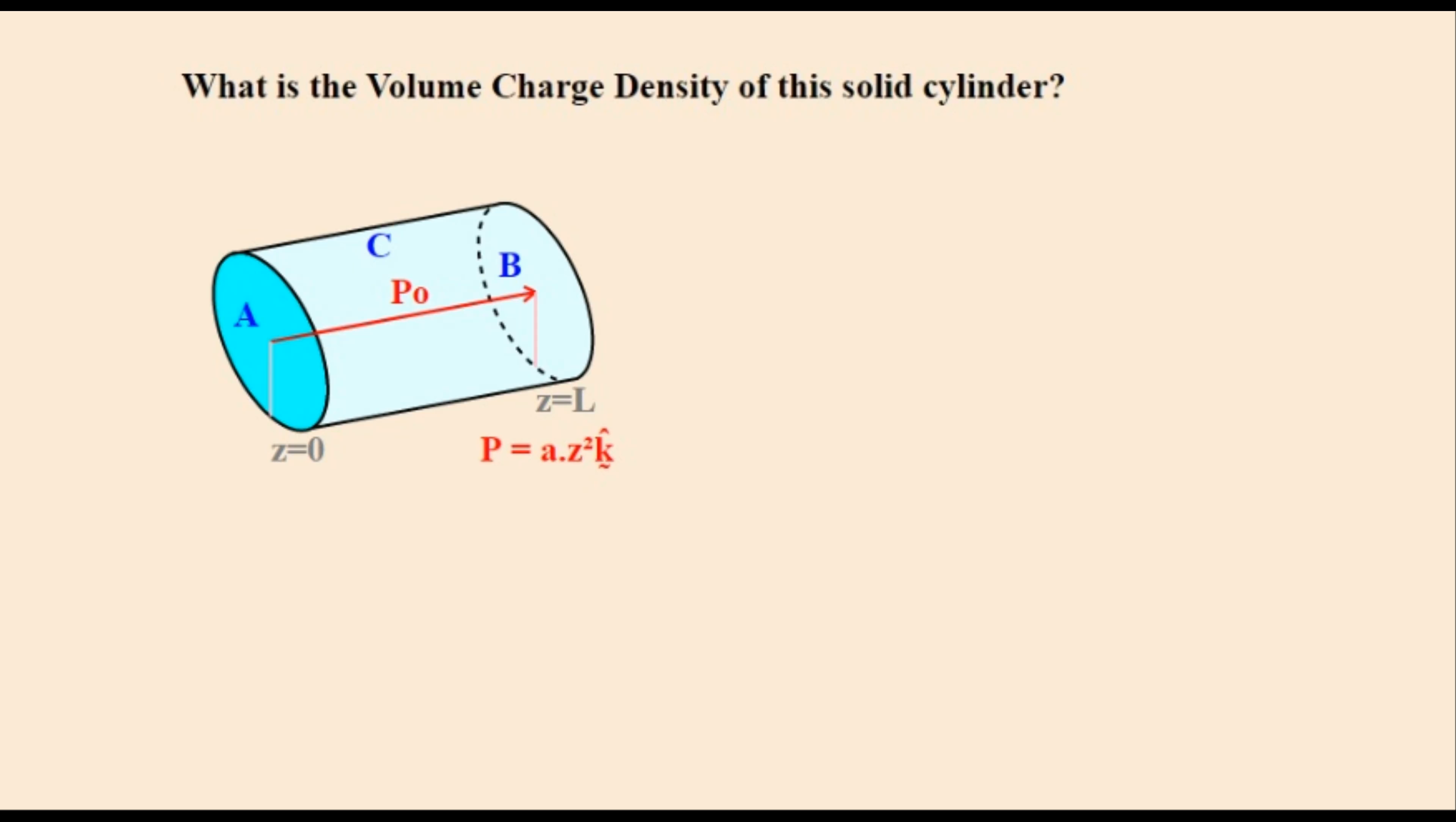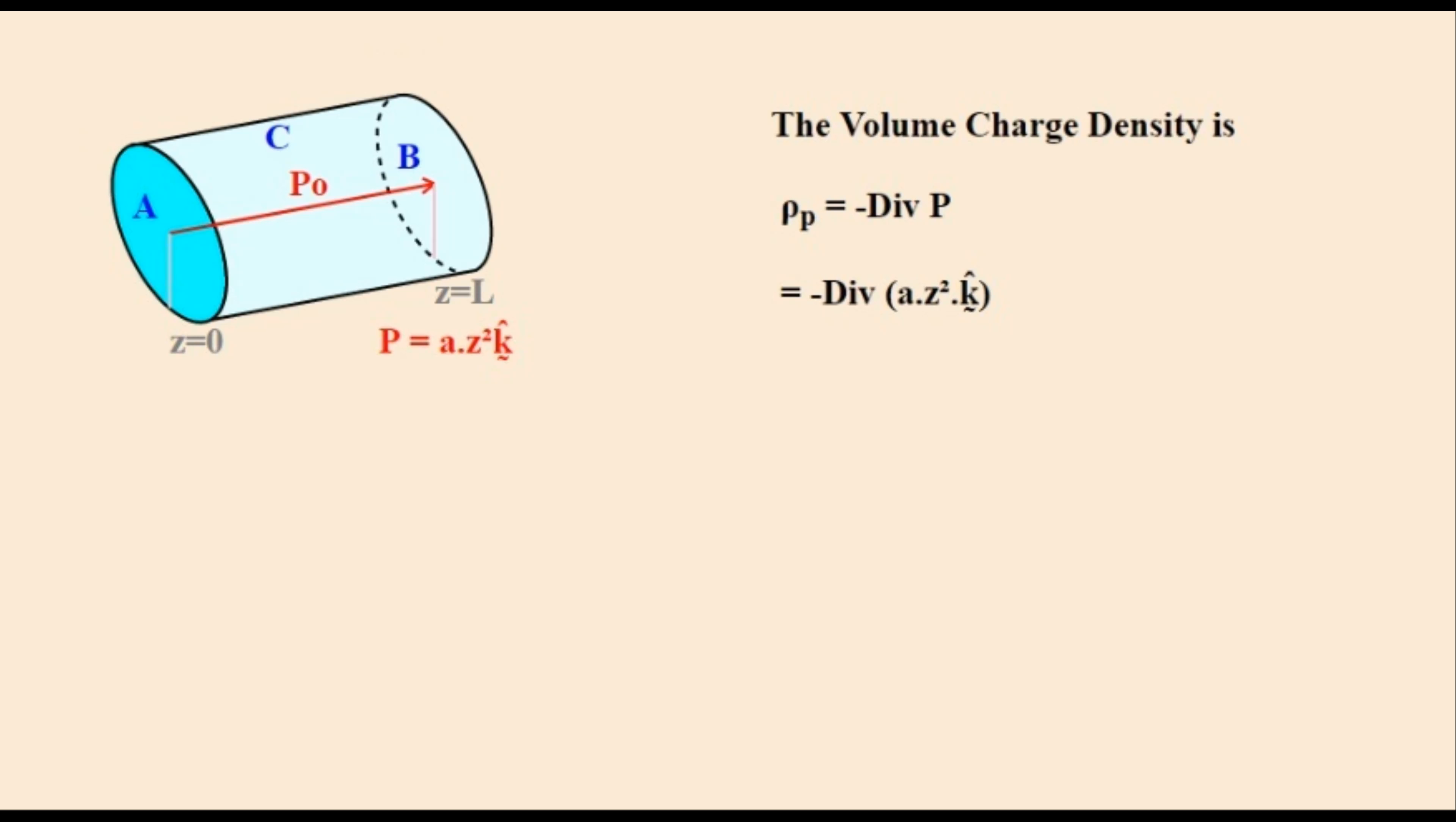Here is an example of a polarized solid cylinder that will give a non-zero volume charge density. The polarization is a function of Z that is written here and isn't constant. We plug this equation for P into the charge density equation as shown. This will give the following answer as shown here.